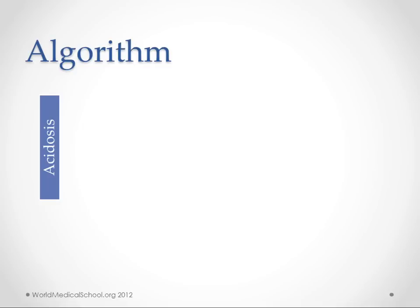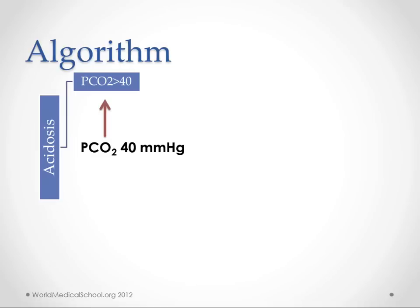So we've got an acidosis — we start out by looking at our CO2 levels. Normal is 40. If it's more than 40, then we think respiratory acidosis: a pH less than 7.35 with a carbon dioxide greater than 40 tells us we're not getting rid of enough carbon dioxide, and that is leading to our acidosis.